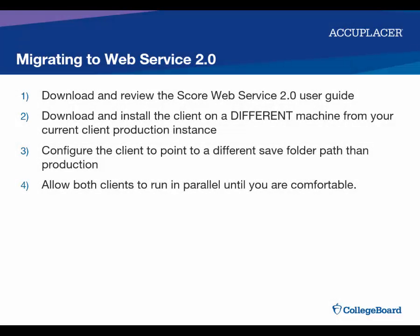If you are already using the SCORE Web Service Client version 1.3 or earlier and you need to migrate to SCORE Web Service version 2.0, we recommend you follow these steps for best results. First, download and review the SCORE Web Service 2.0 User Guide. This guide has information on how to install and use the new version of the client. Next, install the client on a machine that is different from the computer or server on which your current Web Service client is running.